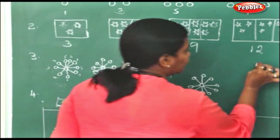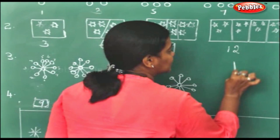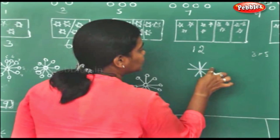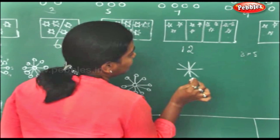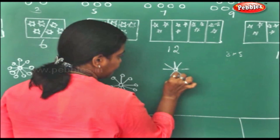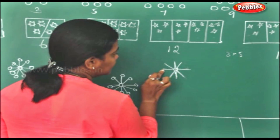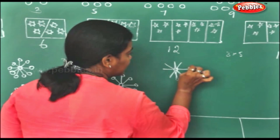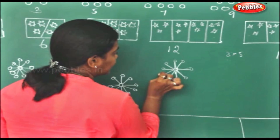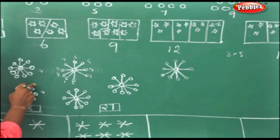Same way we will do. Now 1 is done, 2 is done, 3 is done. And we will do 4 flowers with 9 petals. So 4 flowers into 9 petals. Drawing petals: 1, 2, 3, 4, 5, 6, 7, 8, 9. I have got only 8 petals — I will make another petal, 9. Now you have to make 4 such. 1 is here, 2 is done, 3 is done. So 4 such flowers we will make.